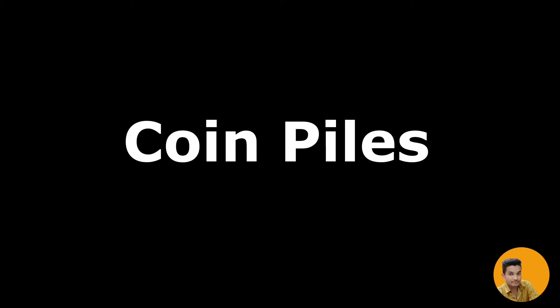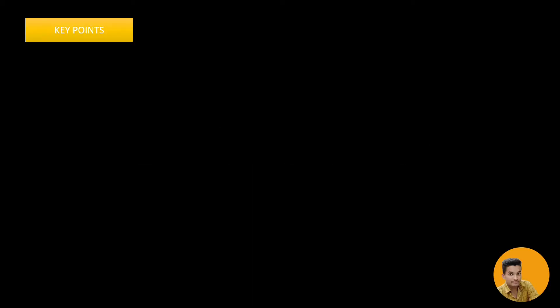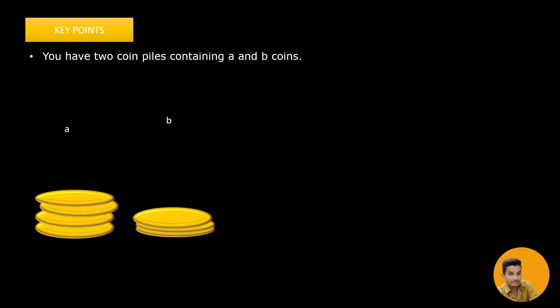Let us look at coin piles. The key points mentioned in the problem: we will be given two piles, left pile and right pile, which contain A and B coins respectively. Here is a diagram representation — we have left pile and right pile, each containing A and B number of coins. As an example, A is 1,2,3,4 and B is 1,2,3.